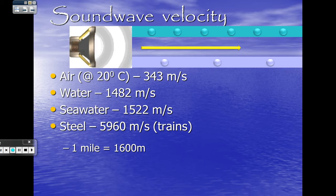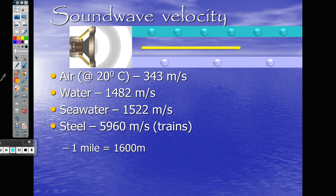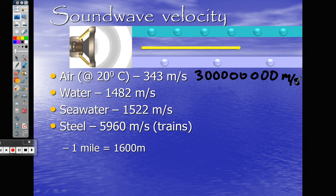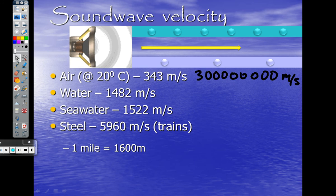What was our velocity for light? Three times ten to the eight — that's 300,000,000 meters per second. Sound, on the other hand, travels through air at 343 meters per second. You can see the great difference here: light travels significantly faster than sound.